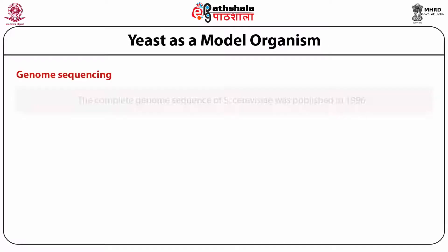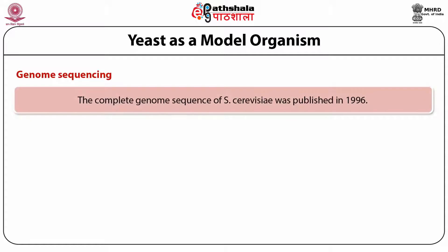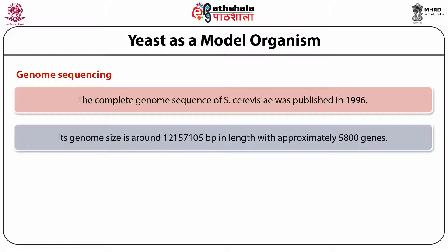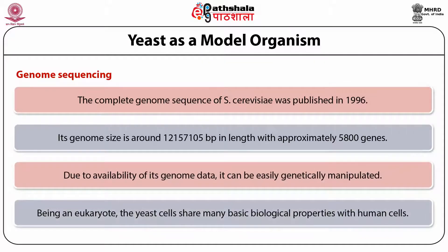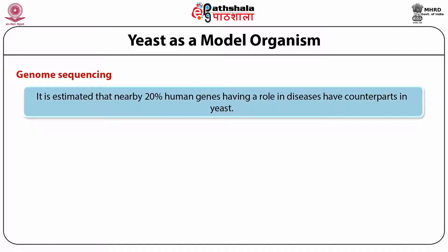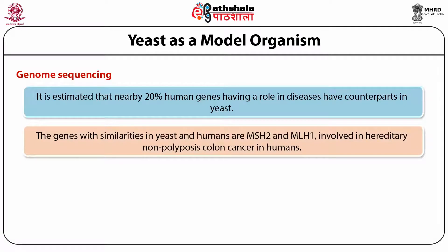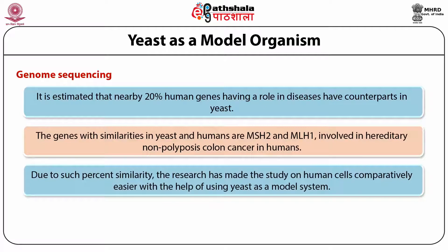The complete genome sequence of Saccharomyces cerevisiae was published in 1996, making it the first eukaryote whose complete genome was sequenced. Its genome size is around 12,157,105 base pairs with approximately 5,800 genes. Due to its availability of genome data, it can be easily genetically manipulated. Being a eukaryote, yeast cells share many basic biological properties with human cells. It is estimated that nearly 20% of human genes having a role in diseases have counterparts in yeast, such as MSH2 and MLH1, involved in hereditary non-polyposis colon cancer in humans.